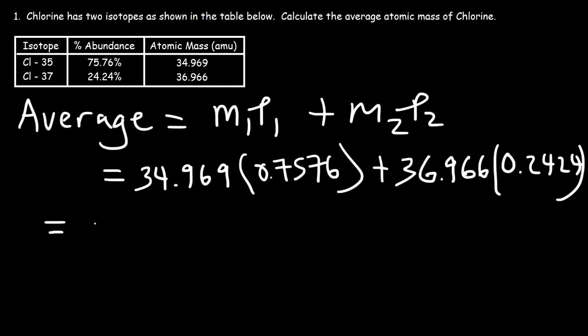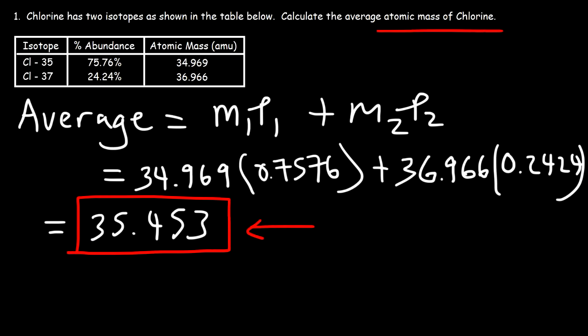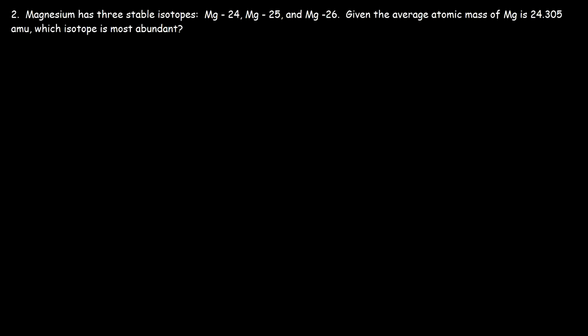You should get this answer: 35.453. And so this is the average atomic mass of chlorine. This is the basic formula that you need to use in order to get the answer. Now let's move on to the next problem.